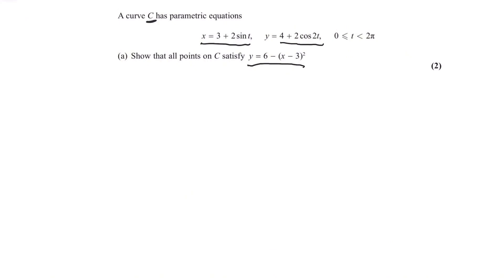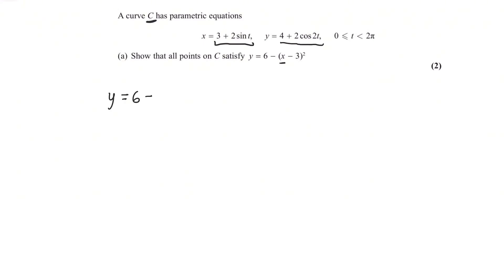How can we do this? Simple. All we need to do is substitute in — instead of x, we sub in 3 plus 2 sine t. And then if the points on C satisfy this, so if our answer is right, we expect the whole term y to be equal to this. So let's work that out and show that it is true. So we have y equals 6 minus, and then instead of x we put 3 plus 2 sine t, and we're taking away 3 and squaring all that. You can see the 3s cancel out.